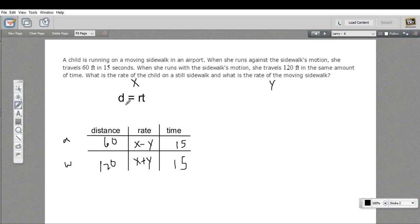I'm just going to arrange them in two equations where distance equals rate times time. So the distance equals x minus y times 15, and distance equals x plus y times 15. And I might as well multiply the 15 through there.